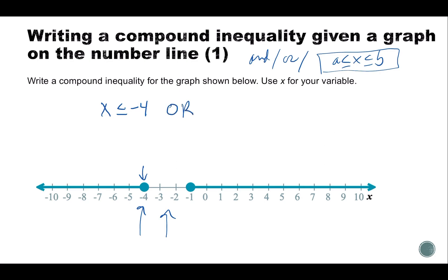Or x is greater than or equal to negative one, because again it's a closed dot. That means we have to have greater than or equal to negative one. That's how we write this compound inequality from our graph.